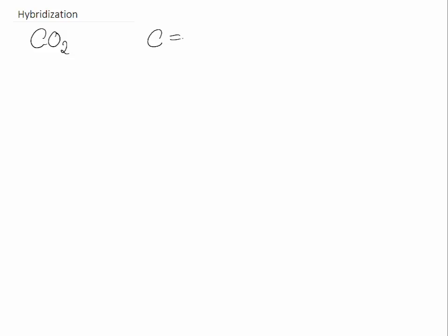This video for CHEM 1211 is going to be about hybridization and bonding. Specifically, I want to take a look at carbon dioxide, which you should be able to draw the Lewis structure for. When you draw the Lewis structure for carbon dioxide, you should see that there are two double bonds to this carbon.